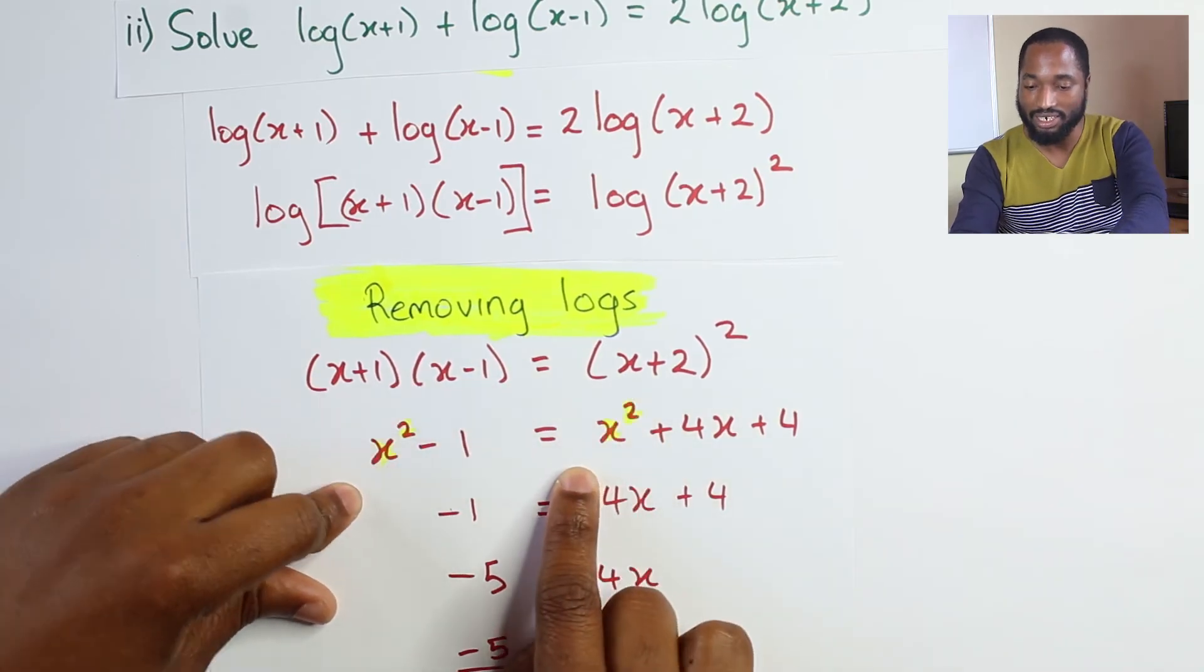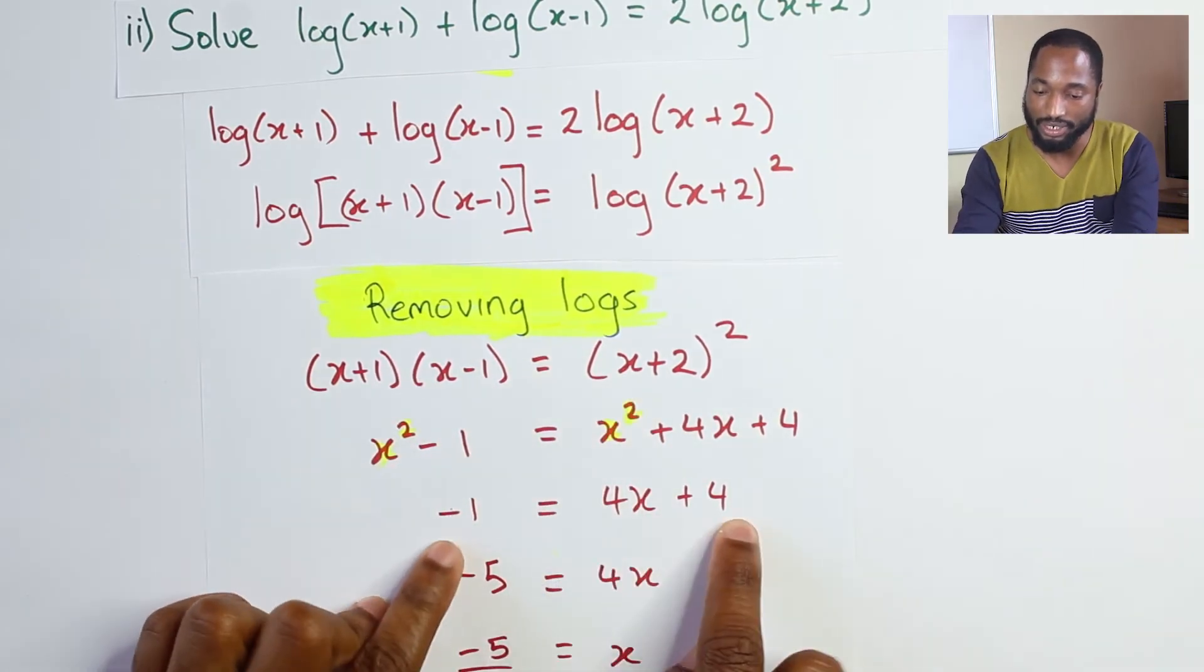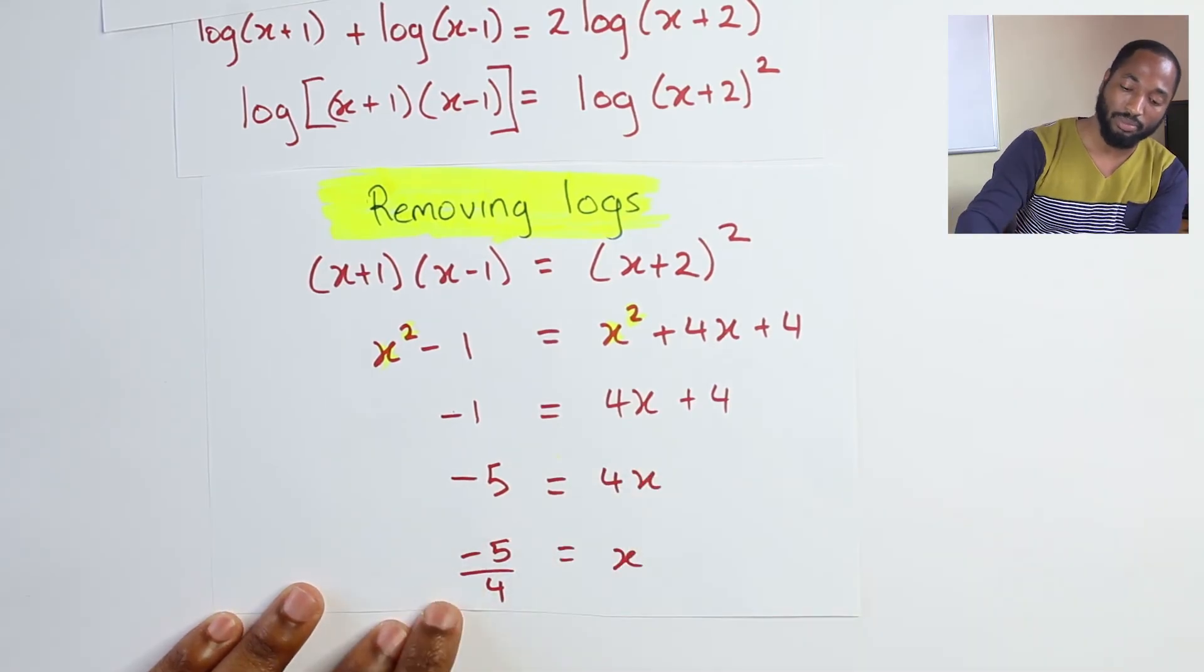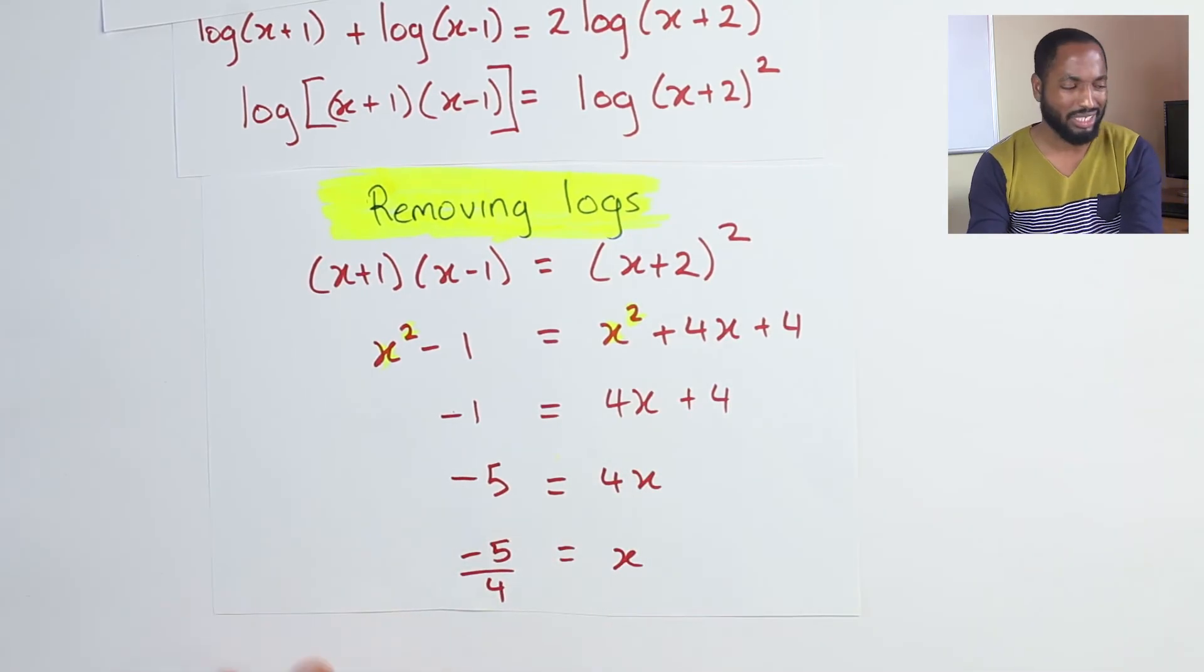Since you have x squares on both sides, you can cancel. You just end up with -1 = 4x + 4. Bring across the four, which will be multiplied, and you end up with x = -5/4.